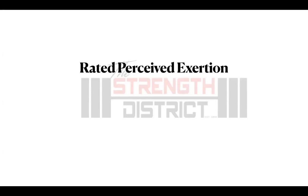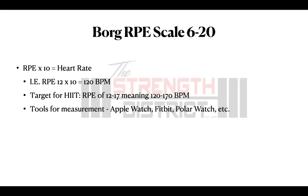Both of these can be measured by the Rated Perceived Exertion, or RPE. For a HIIT exercise you want to use the Borg RPE scale, which runs from 6 to 20. Why 6 to 20? Because you multiply wherever you land by 10, and that determines how many beats per minute you're looking to achieve. For HIIT, an RPE of 12 to 17 — meaning 120 to 170 beats per minute — is the optimal target range.